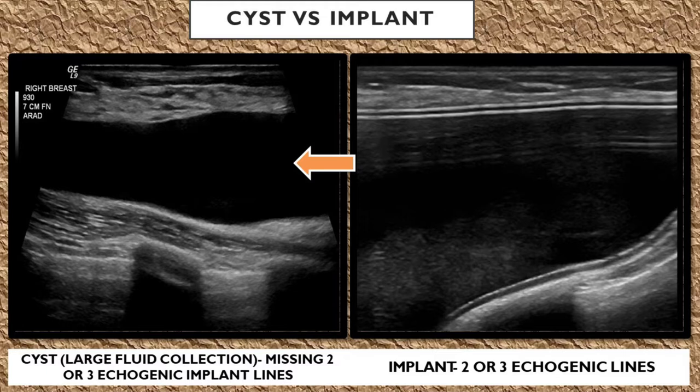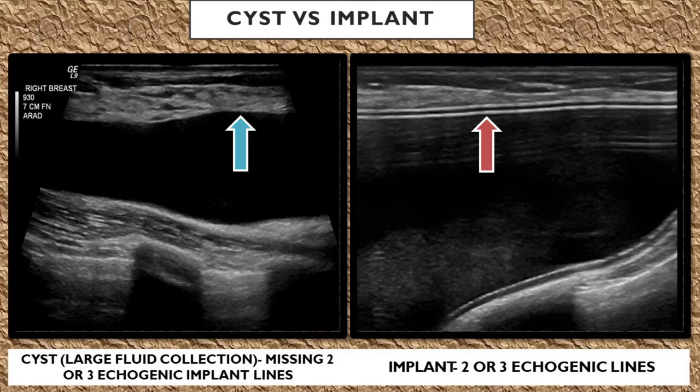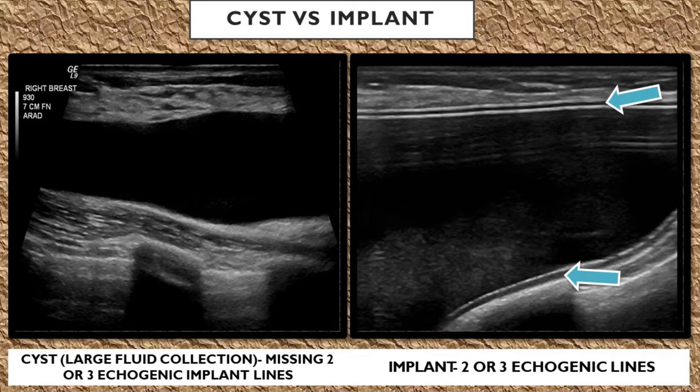With a large breast cyst or a large fluid collection in the breast like a seroma, the walls of that cyst are not going to be bright and echogenic. It's going to be missing the triple line sign or the double line sign of the echogenic implant shell walls. With an implant, you're going to clearly see the bright echogenic double line sign or triple line sign, with the anechoic lucency in between those lines. This is the way to tell between a large fluid collection in the breast and a breast implant.